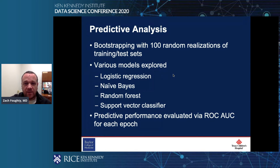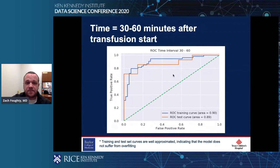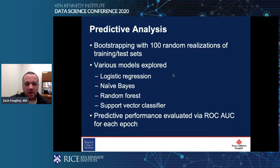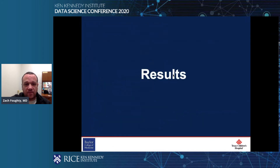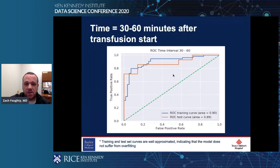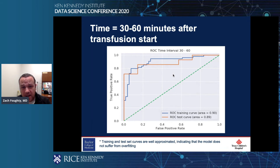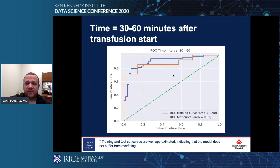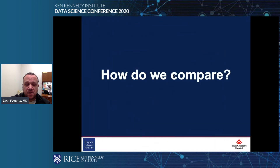For results, logistic regression performed the best, and the best time period was 30 to 60 minutes after the start of transfusion. The ROC AUC for our test set was 0.89, and it closely approximates the training curve, which indicates the model does not suffer from overfitting. This is a fairly reliable measure to predict fluid responsiveness.